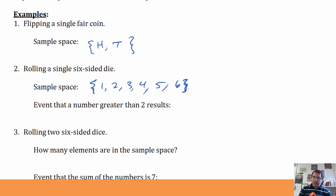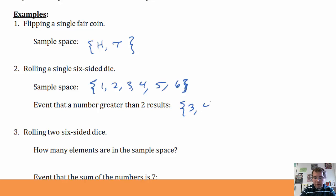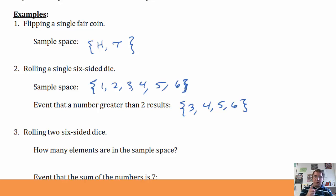What specifically is the event that the number I get is greater than two? Well, that would be the event that I get either a three, a four, a five, or a six. That is the subset of my sample space that deals with that event — the outcomes that give me my desired outcome of a number greater than two. Notice that is a subset of my sample space.